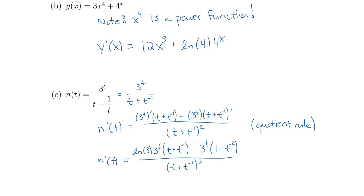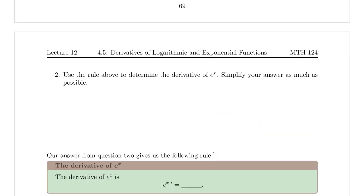So from here, all we need to do is solve two derivatives. The derivative of 3 to the t is given to us by that definition. So that's the natural log of 3 times 3 to the t. And then we need this derivative here, but this is just the derivative of two power functions. We get 1 minus t to the negative 2 for that derivative.